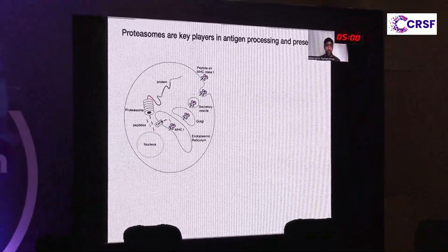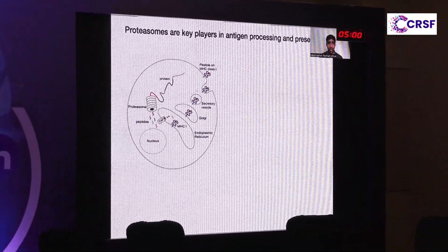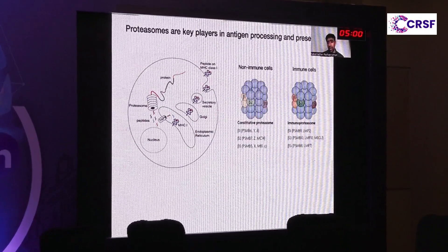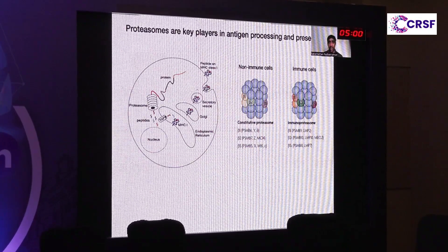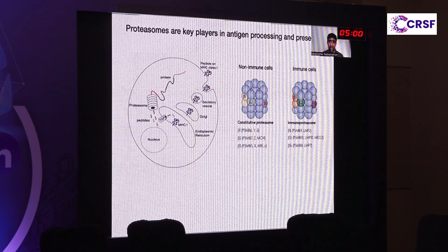As we know, proteasomes play a major role in antigen processing. These proteasomes are of different types, for example constitutive and immunoproteasome, and these are specifically expressed in different cell types. Constitutive proteasomes are expressed mostly in non-immune cells, whereas immunoproteasomes are broadly expressed in immune cells.